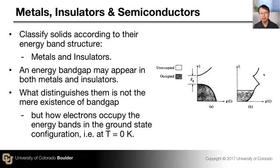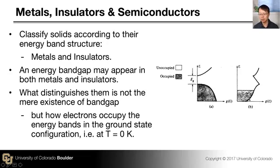In a typical energy band diagram for a metal, you typically have one continuous energy band in which electrons fill up to a certain point. So you have one large band that is partially filled with electrons.